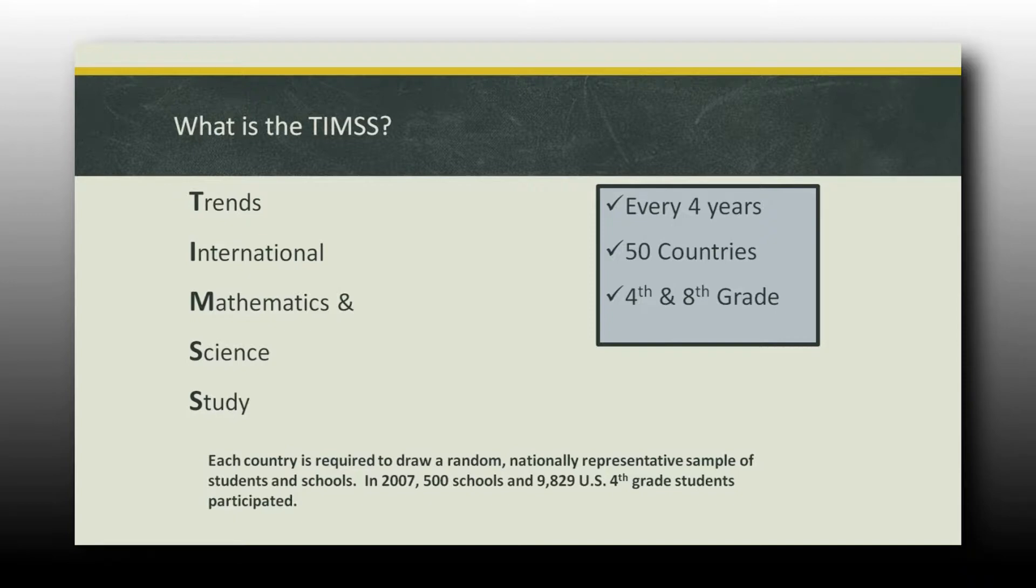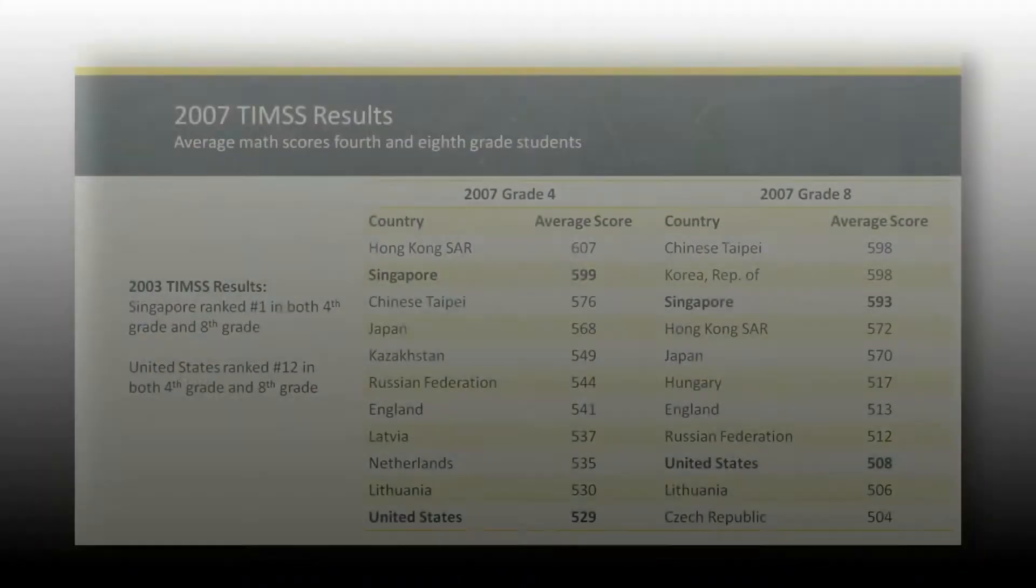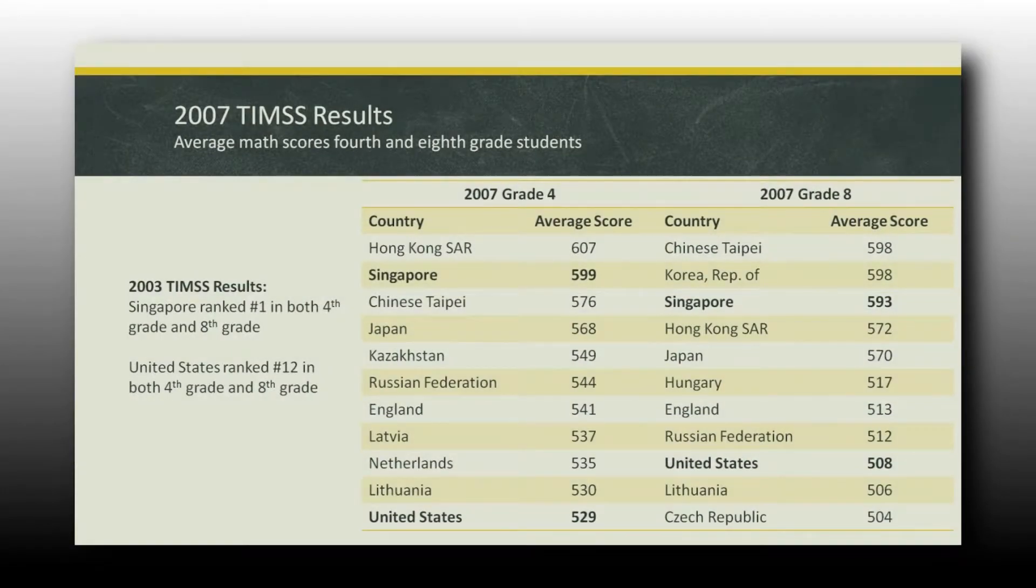So for example, in 2007, 500 schools and 9,829 U.S. fourth graders took the TIMSS math test. So that just gives you an idea - it's just a random sampling of schools and students. Back in 2003, Singapore ranked number one in both their fourth grade and eighth grade TIMSS results. So that was pretty powerful. That trend continued in 97 in the previous years. The United States, we ranked 12th in both fourth grade and eighth grade.